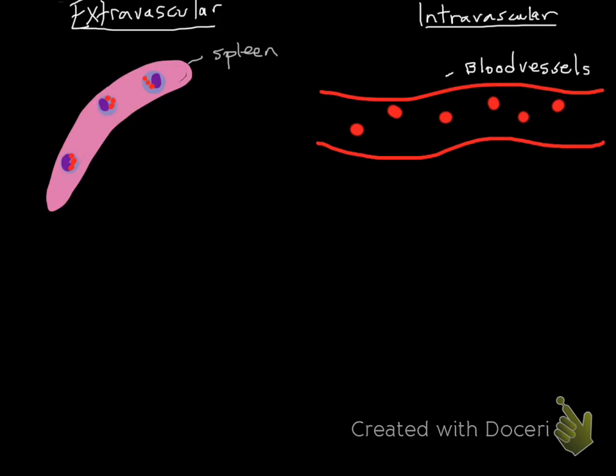Extravascular versus intravascular hemolysis doesn't tell you anything about the etiology or how to treat it, but it's important to understand the mechanism. Extravascular hemolysis is essentially the normal breakdown of red cells gone vastly awry. Here are red cells being phagocytized by splenic macrophages, and there's a lot of them. This can also happen in the liver, lymph nodes, but the spleen is most common.